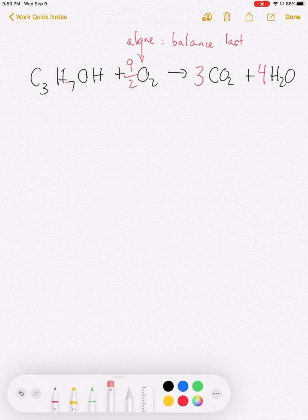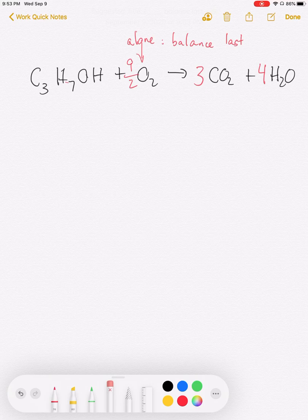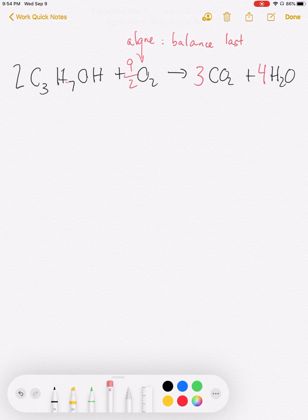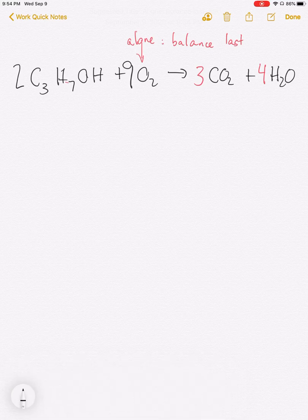So I'm starting with an unwritten coefficient of one in front of the propanol. So I'm going to double that and make it a two. I can then double the nine halves and make that a nine.